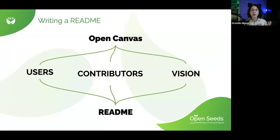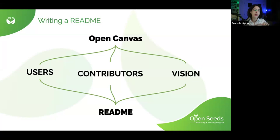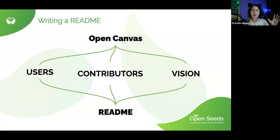The process to write a README: now that you have an open canvas, you can take three elements to help you write it. You have the users, the contributors, and your vision statement. The first two — users and contributors — will be your target audience; you're going to write for them, with them in mind. The vision is the main thing you need to communicate right away at the top of your README — it's the main message. You start your README by saying why you're doing what you're doing, because that is going to keep people reading and engaged with your project.